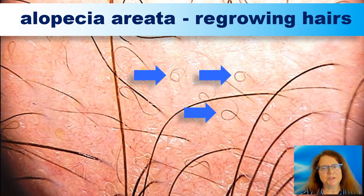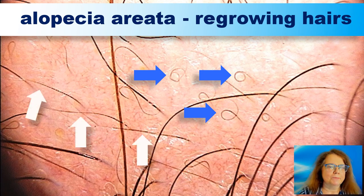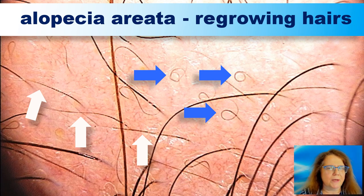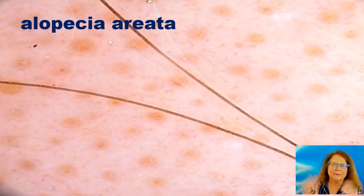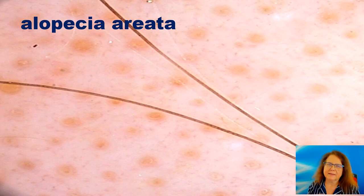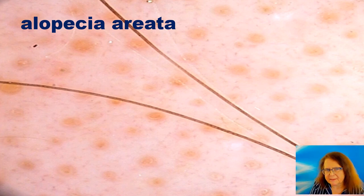This is a typical image of a patient with regrowing hairs in the course of alopecia areata. The blue arrows point to the pigtails. The yellow dots mark hair follicles which are empty in the sense that they contain no hair shaft, but they contain sebum and keratotic material which make them yellow.